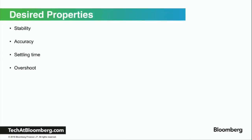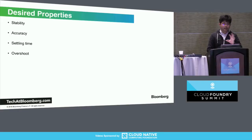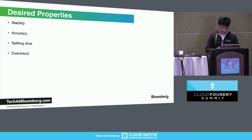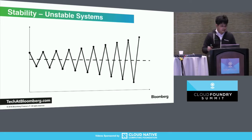Any feedback loop system in control theory has four desirable properties. I'll explain the intuition in a linear system and the math behind each of them. The first is stability.